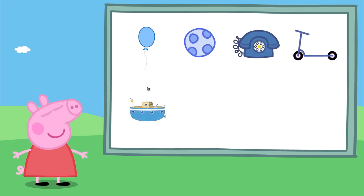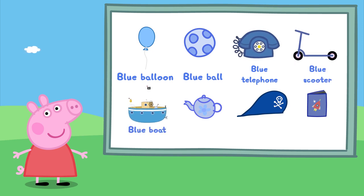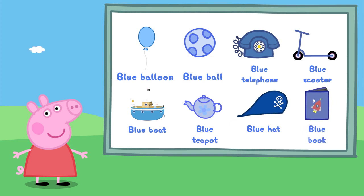Can you remember all the blue objects, Peppa? Well done Peppa! We have a blue balloon, a blue ball, a blue telephone, a blue scooter, a blue boat, a blue teapot, a blue hat, and a blue book. Well done!